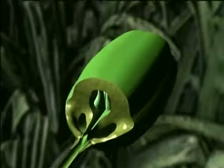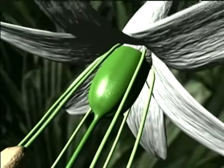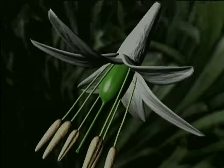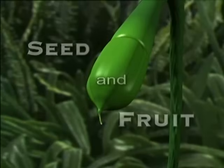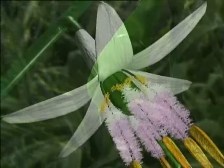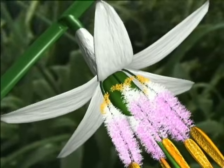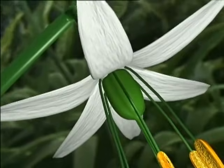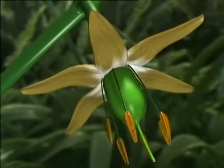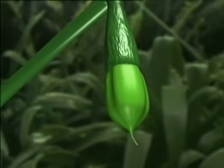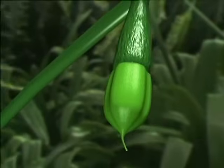Each ovary now has many fertilized ovules, which will develop into seeds. After the ovules are fertilized, the flower undergoes several changes. Many parts begin to wither and are eventually shed. Only the ovary remains healthy and firmly attached to the stem.